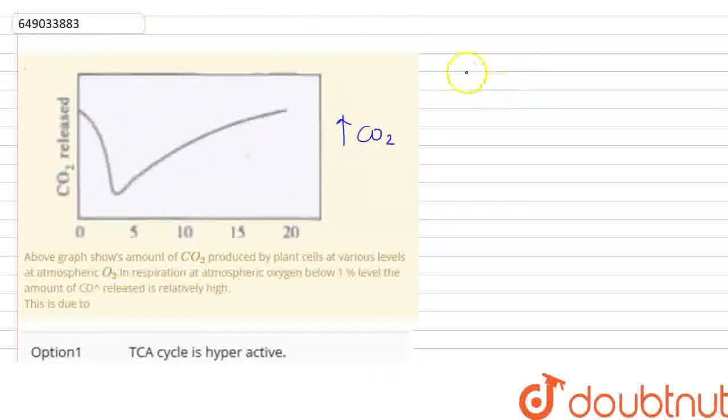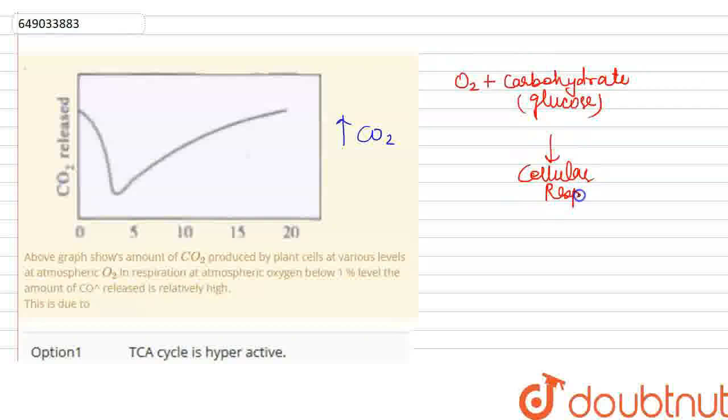So you see, oxygen plus carbohydrate, which usually is glucose, this is what plants use in a process called cellular respiration. Cellular respiration releases carbon dioxide, water, and ATP. Cellular respiration usually occurs in mitochondria, the powerhouse of the cell where ATP is produced.